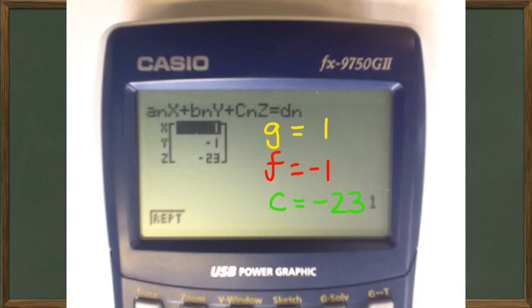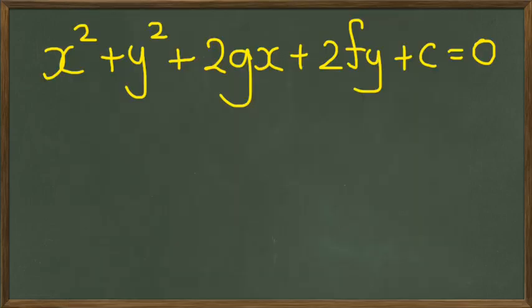So going back to our equation, which was this right here, but we figured out the values of g, f, and c, which were 1, negative 1, and negative 23.